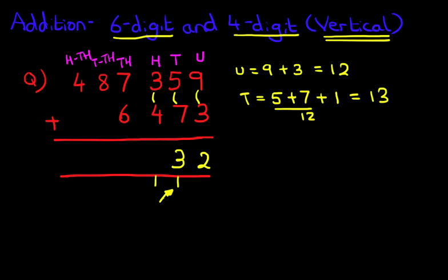Next is the hundreds column. Here we've got three plus four plus the one we have carried over. Three plus four is seven, plus the one is eight. So let's write that down.